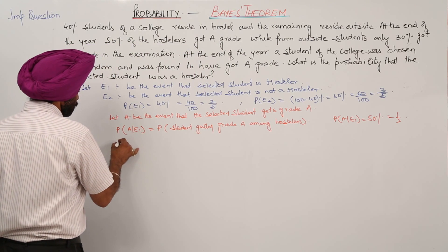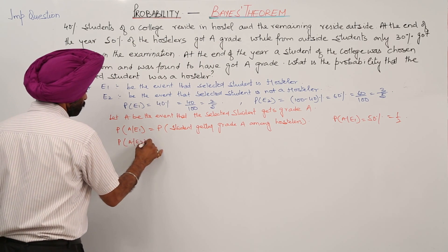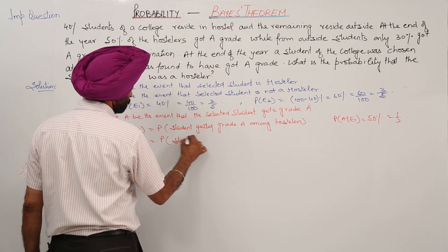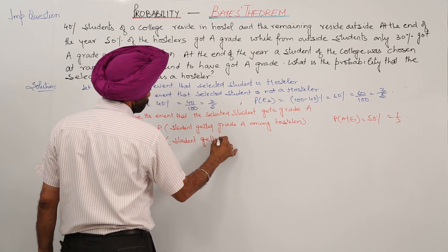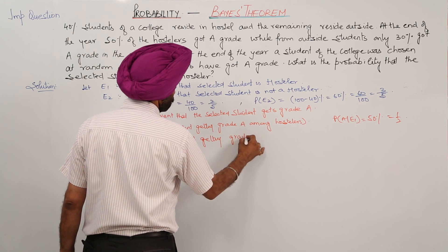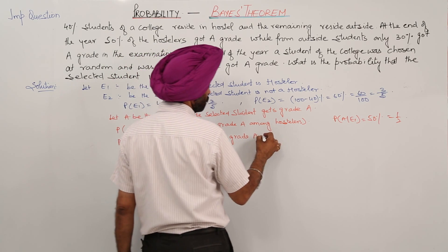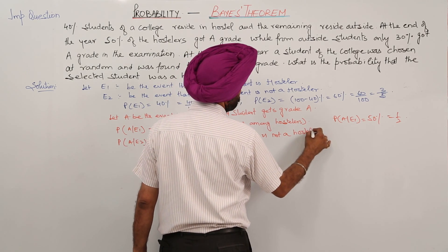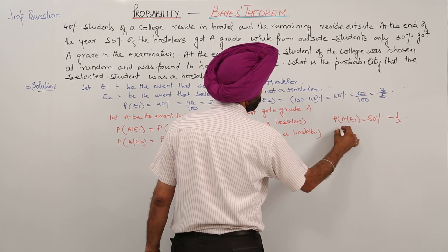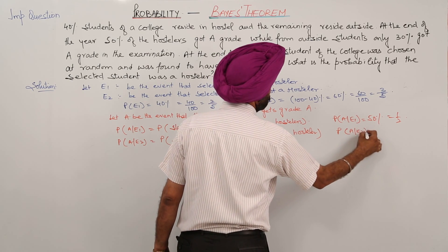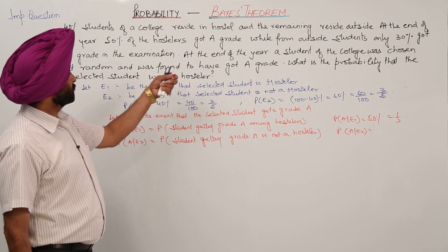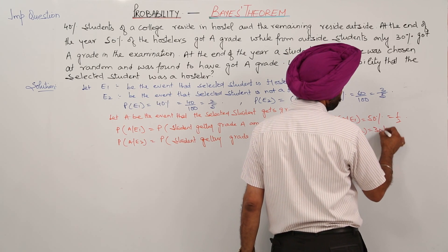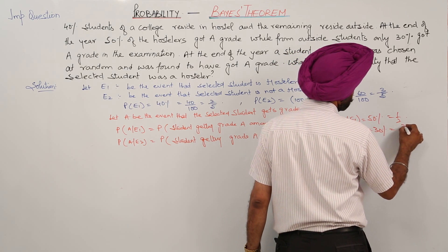Now, P(A|E2) is the probability of a student getting grade A given they are not a hostler. It is given that 30% got grade A. So this becomes 30%, or we can write it as 3/10.